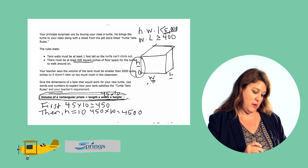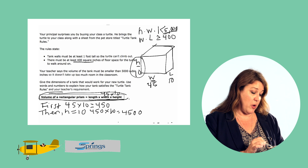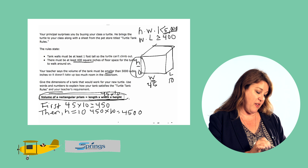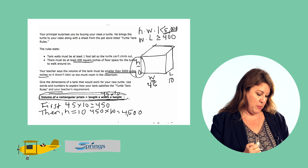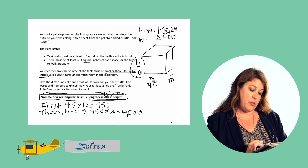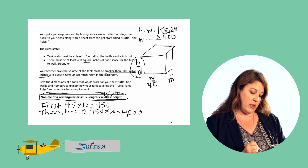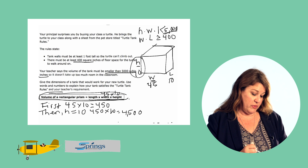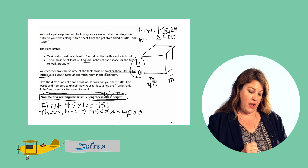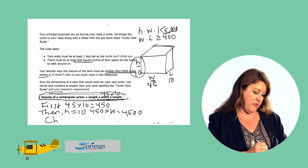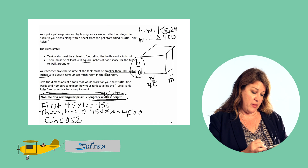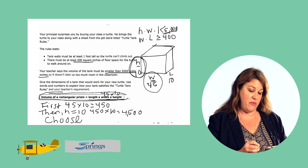That gives us our total volume, which meets the teacher's requirement that the volume be smaller than 5,000 cubic inches — we have 4,500 cubic inches. So we used the length times the width, then multiplied by the height of 10 and calculated the volume. Volume equals height times width times length, which equals 4,500. Our final dimensions are: height = 10, width = 45, and length = 10. That's one option for creating a turtle tank that meets all of the rules — you might come up with a different option, but that's how we solve problem number five.